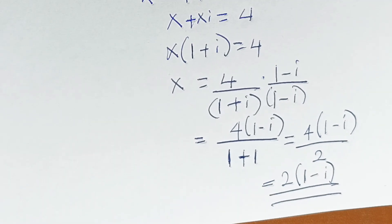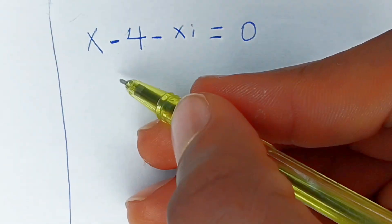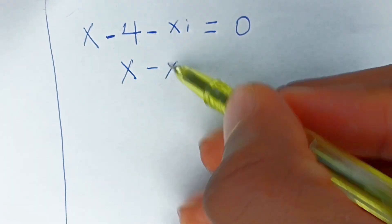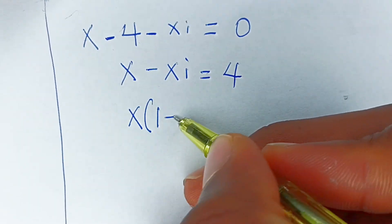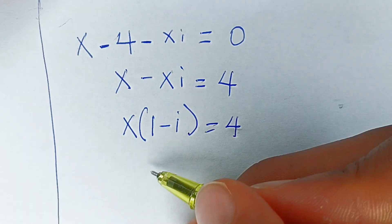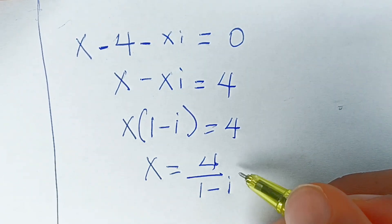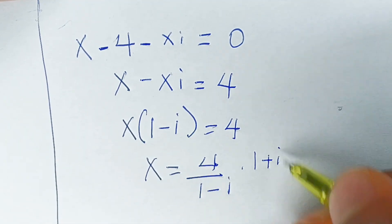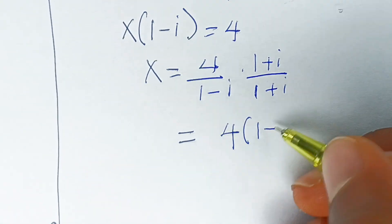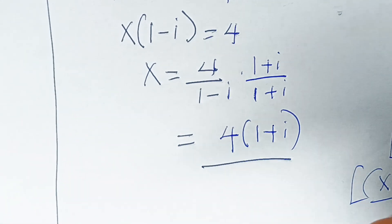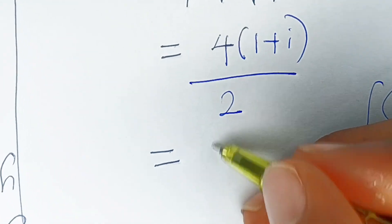The second factor gives x minus 4 minus xi equals 0, so x minus xi equals 4, meaning x(1 minus i) equals 4. Therefore x equals 4 divided by (1 minus i). Rationalizing by multiplying by (1 plus i) over (1 plus i), we get 4(1 plus i) divided by 2, which equals 2(1 plus i).